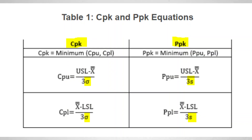If you look at the formulas on your screen, the formula for calculating CPK and PPK is almost identical. The formula for CPK is USL minus X-double-bar divided by 3S, where S is the standard deviation. The key difference is that CPK uses within-subgroup standard deviation while PPK uses the standard deviation for the entire population.